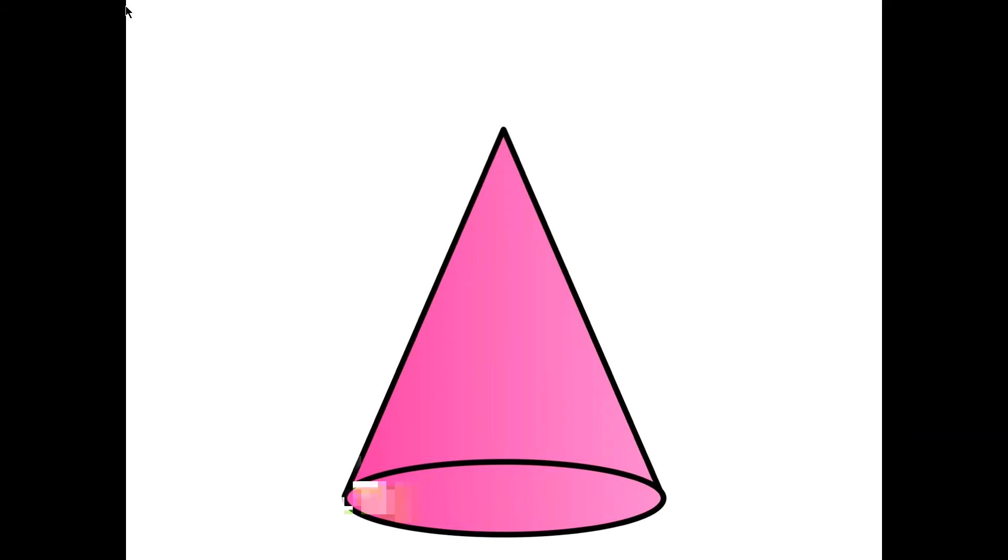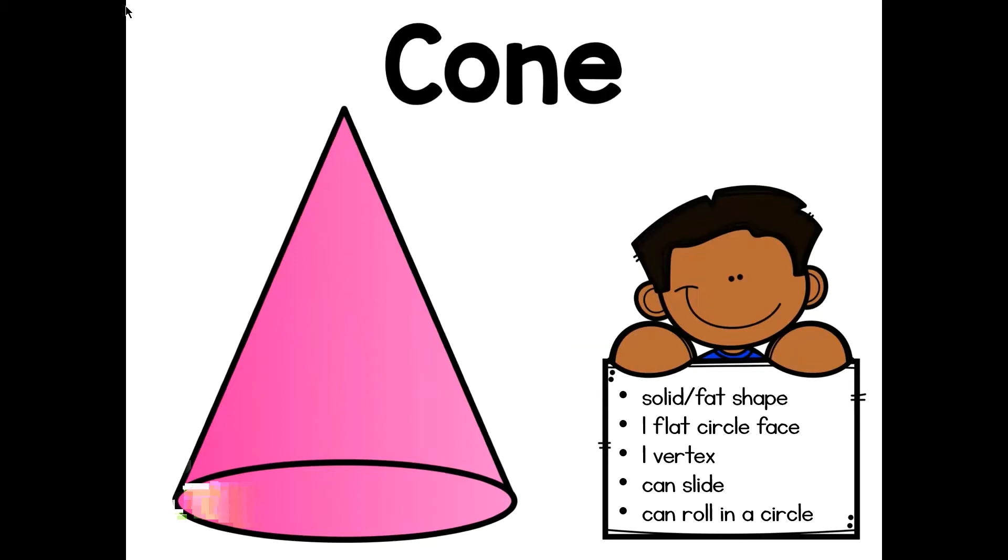Do you know what shape this is? This shape is a cone! This fat shape has one flat face and one vertex. Remember, a vertex is the name for just one vertices, one point. This shape is cool because it can slide on its flat face, or if you lay it on its side, it can also roll. But we discovered that this shape doesn't roll in a straight line. It rolls in a circle!